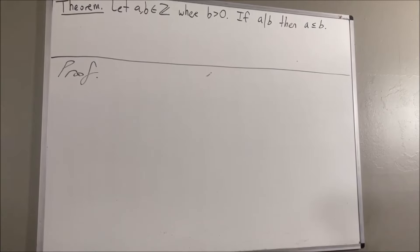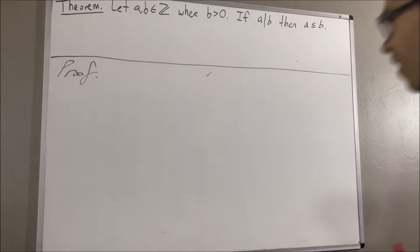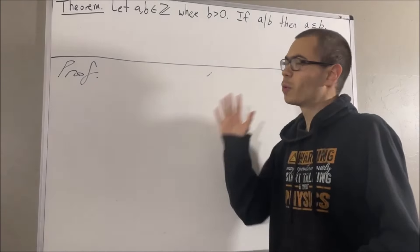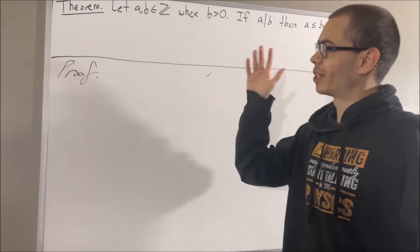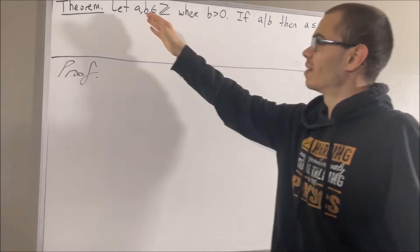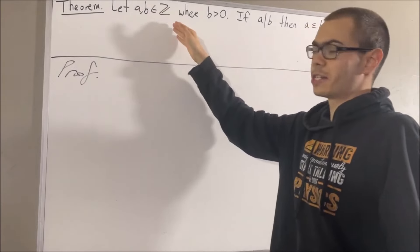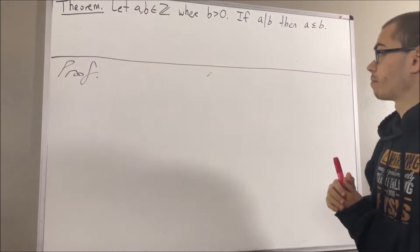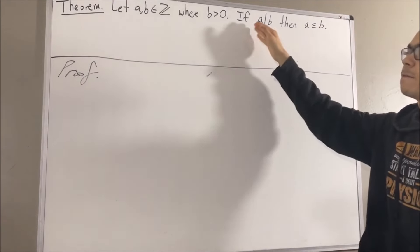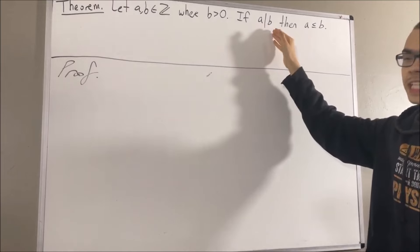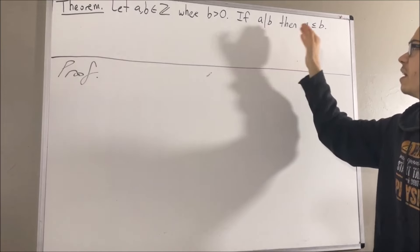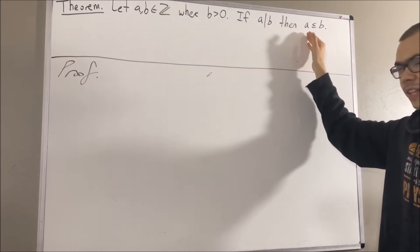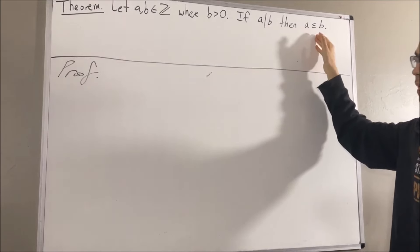Hello! In this video, we are going to prove the following theorem. Let a and b be integers where b is greater than zero. If a is a divisor of b, then a is less than or equal to b.